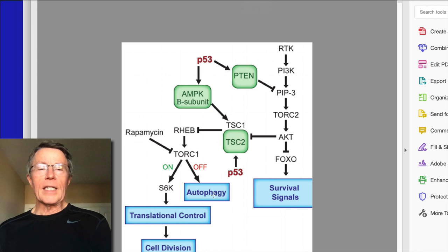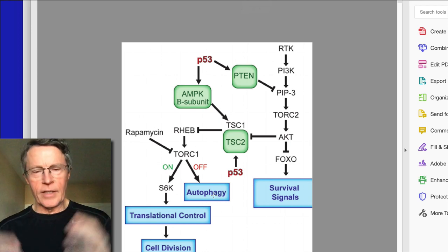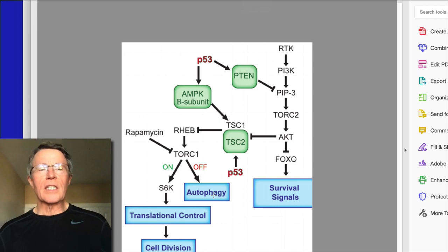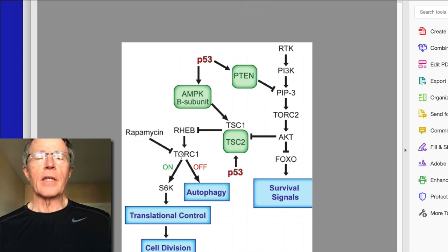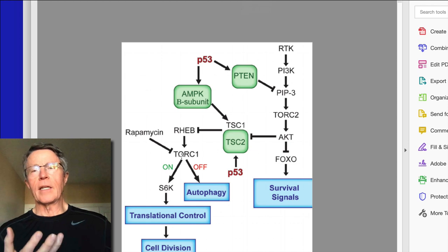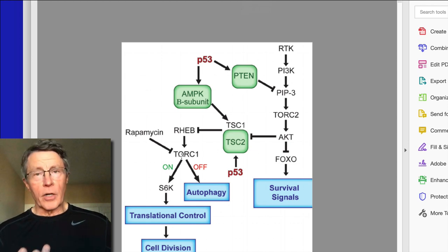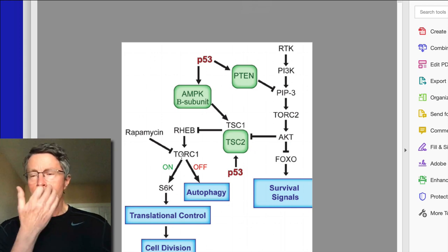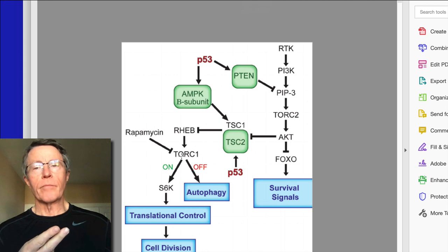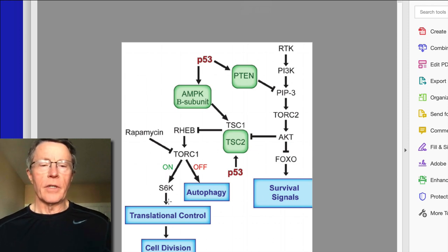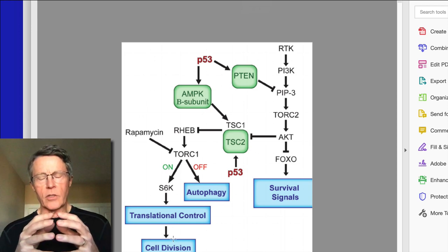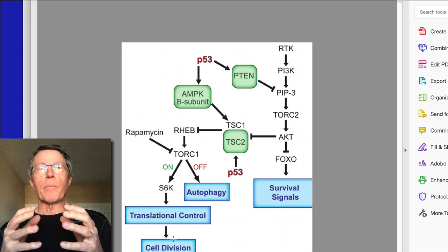So the cell is basically eating components of itself — really it's using this as a recycling or trash cleanup mechanism. The decision point is that mTOR or TORC1 component. If the cell already has growth hormone and growth biomarkers such as IGF-1, a lot of amino acids and proteins in the lysosomes, and a lot of glucose, then it's going to go toward translational control and cell division — the pathway of cell growth.